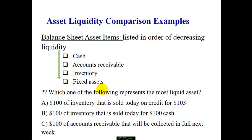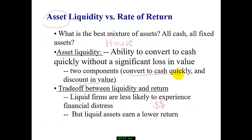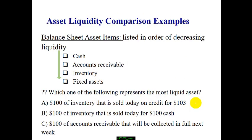Let's assess your knowledge on asset liquidity. Suppose there are three $100 items: inventory sold today but on credit for $103; inventory sold today for $100 cash; and $100 of accounts receivable to be collected next week. Two concepts: how quickly to convert to cash, and whether there is a discount. Choice B — we got the cash today for $100, no discount — is the most liquid one.